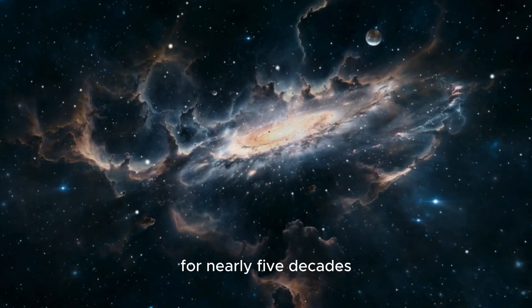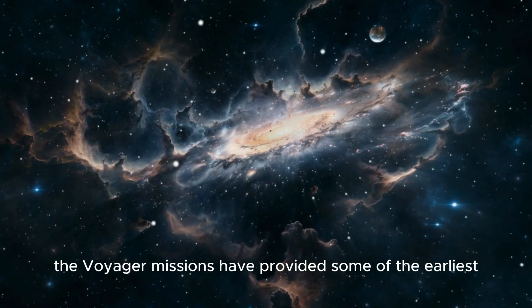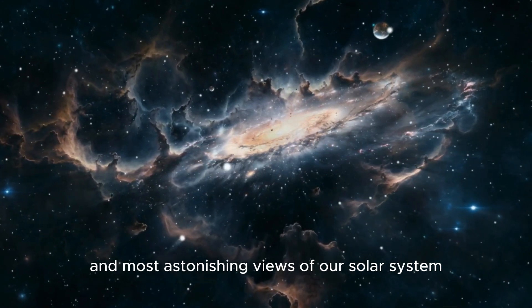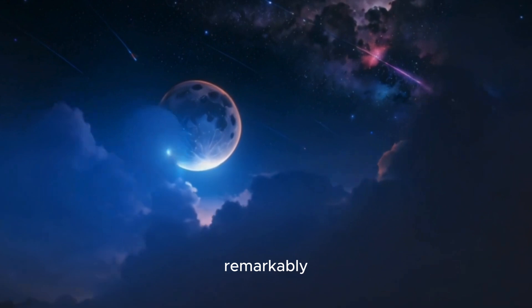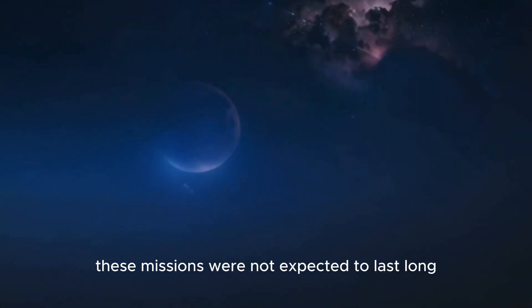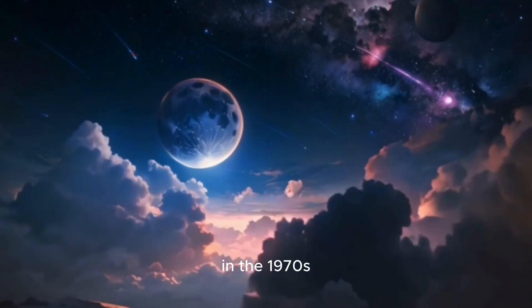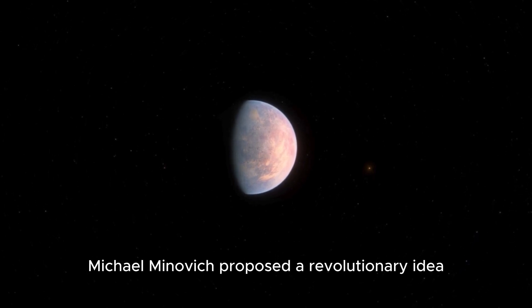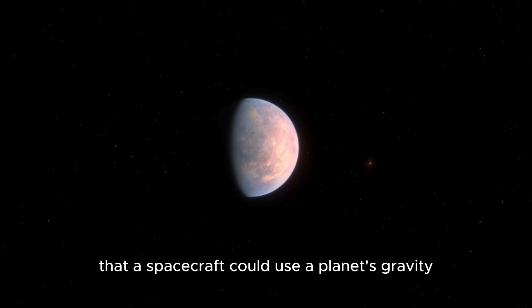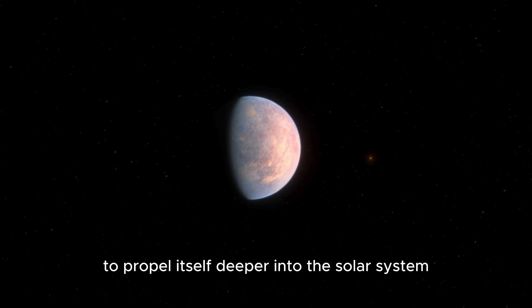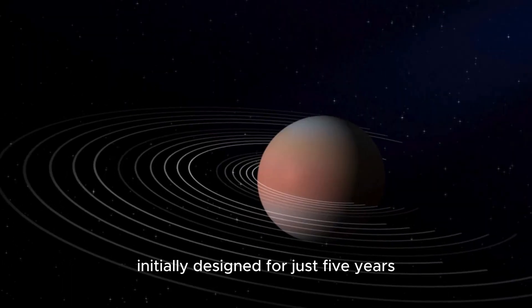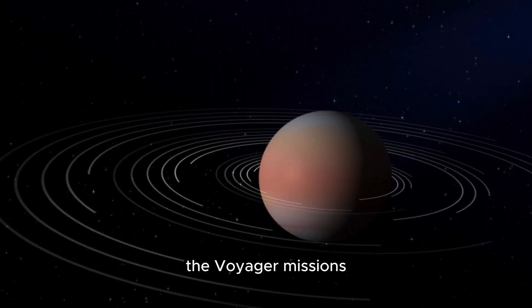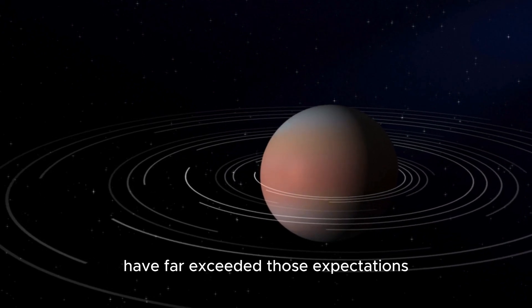For nearly five decades, the Voyager missions have provided some of the earliest and most astonishing views of our solar system. Remarkably, these missions were not expected to last long. In the 1970s, Michael Minovich proposed a revolutionary idea that a spacecraft could use a planet's gravity to propel itself deeper into the solar system. Initially designed for just five years, the Voyager missions have far exceeded those expectations.